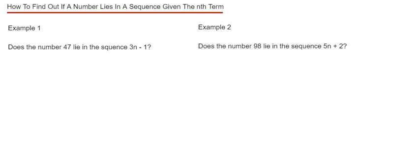So let's have a look at example one then. Does the number 47 lie in the sequence 3n minus 1? So the way you do this is to set up an equation and make the nth term equal to the number that you're deciding is in the sequence.